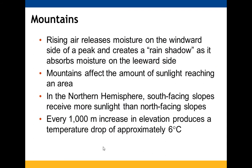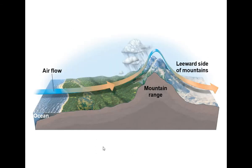Mountains cause rising air to release moisture on the windward side of the peak, creating a rain shadow, while absorbing moisture on the leeward side. Mountains also affect how much sunlight an area receives — in the Northern Hemisphere, south-facing slopes get more sunlight than north-facing slopes. Every 1,000-meter increase in elevation causes temperature to drop approximately 6 degrees Celsius. A personal example: hiking to a lake in Colorado in December, the temperature dropped from the 40s at the base to snowing at the summit.